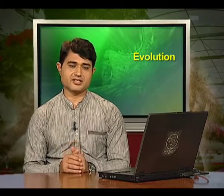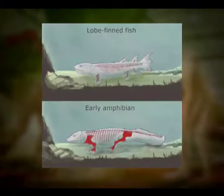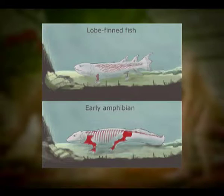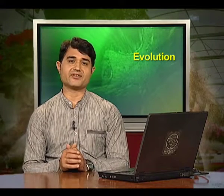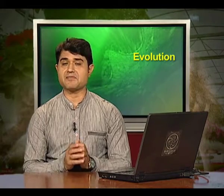In 1938, a fish caught in South Africa happened to be a coelacanth, which was thought to be extinct. These animals, called lobe-fins, evolved into the first amphibians that lived on both land and water. There are no specimens of these left with us. However, these were ancestors of modern-day frogs and salamanders.